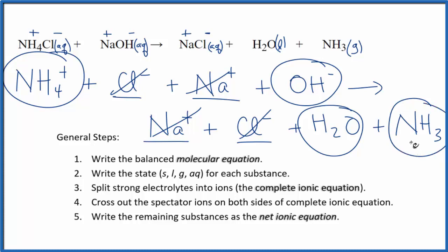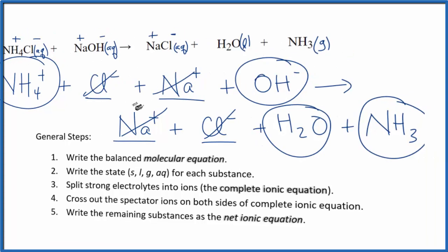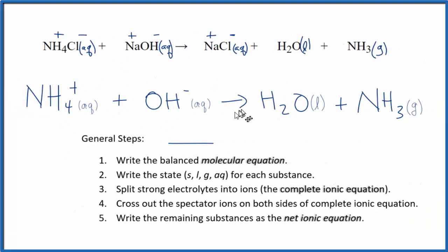then I'll write the states in, and this will be the very nicely formatted net ionic equation for NH4Cl plus NaOH. And this is the net ionic equation for ammonium chloride plus sodium hydroxide.